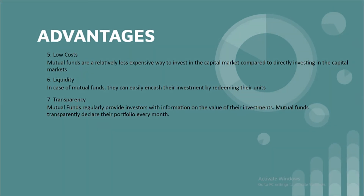The seventh advantage is transparency. Mutual funds regularly provide investors with information on the value of their investment. The NAV of the mutual fund is readily available on a daily basis, so investors always know the current value of their investment. Mutual fund companies also declare their portfolio every month so investors can know where their money is deployed.